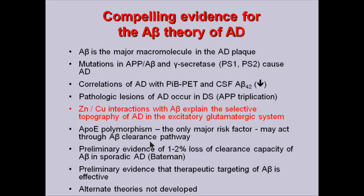I draw your attention to this particular interaction that I'm going to concentrate on: A-beta, the amyloid subunit, interacts with copper and zinc and provides an explanation for the long-puzzling selective topographic dispersion of the lesions in the brain. In the Alzheimer's brain there is a heavy concentration of these plaques in the glutamatergic system, related in part to the high concentrations of extra-synaptic zinc and copper in that system. The single major genetic risk factor for late onset Alzheimer's disease is the APOE polymorphism, which is possibly related to the A-beta pathway. There is now increasing though preliminary evidence of a failure of the clearance mechanisms of A-beta in the aging brain, giving rise to the gradual accumulation of A-beta as insoluble plaques.